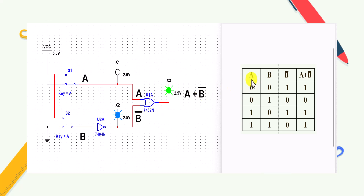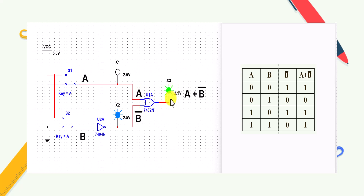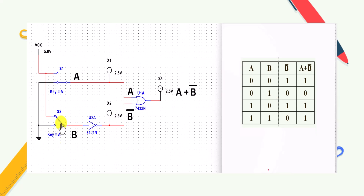This is the truth table for A and B - that is switches S1 and S2 - and the output. First condition: S1 and S2 off, B̄ = 1, output is 1. Next condition: A=0, B=1, switch S2 on, NOT gate output is 0, so A+B̄ = 0+0 = 0.